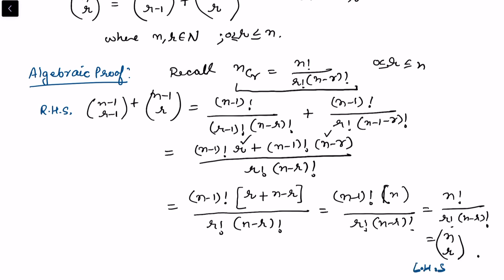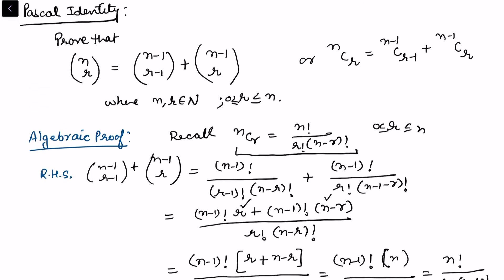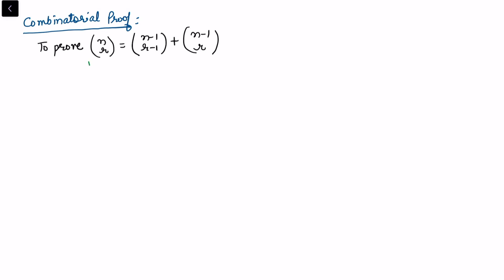That is the same as the left hand side, which is what we desired. So this completes the simple algebraic proof. Now I want to present a combinatorial proof for Pascal's Identity. In the combinatorial proof, I fix an enumeration problem and count it in two different ways — one corresponding to the left hand side and another to the right hand side — showing that these counts come from the same object, so there must be equality between them.